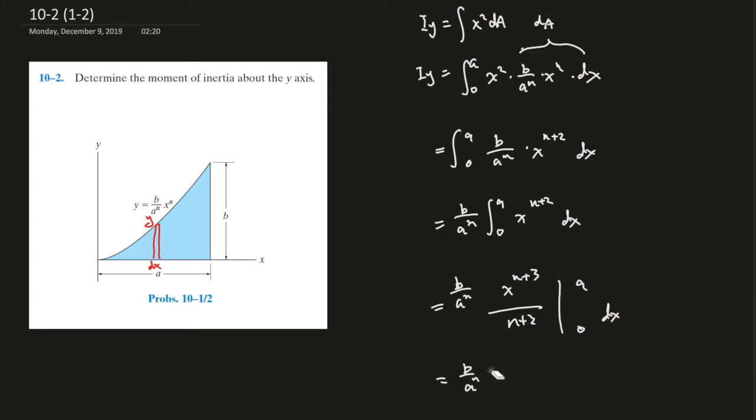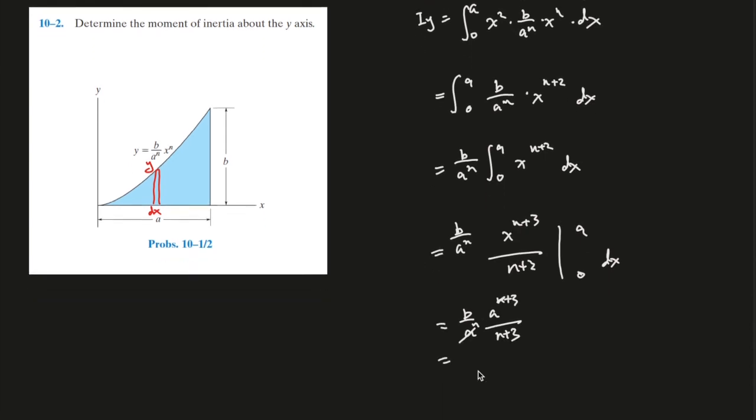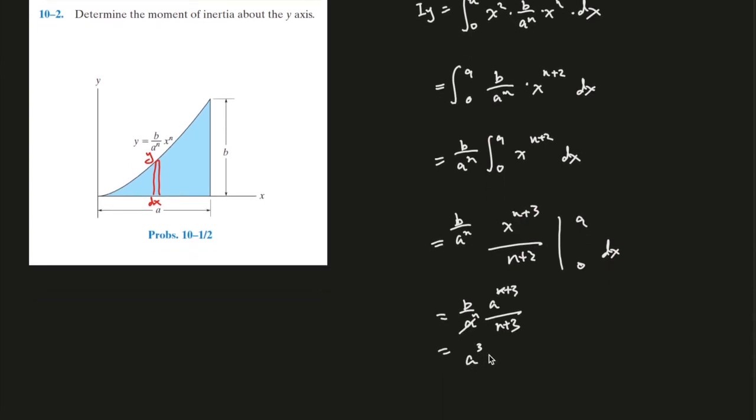Now we plug a in, it would be a to the power of n plus 3 over n plus 3, right? These two cancels out, and cancels out this part. So now it would just be a to the power of 3 times b over n plus 3.